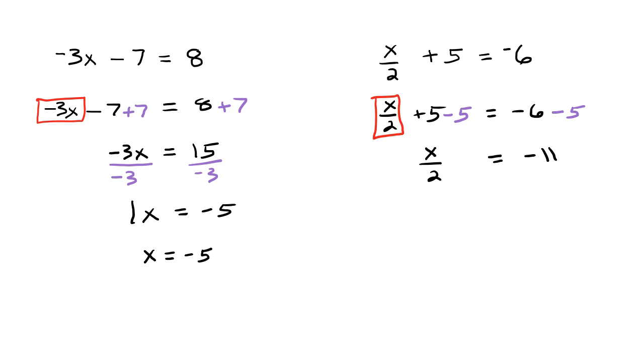Now to get x all by itself, I need to deal with this 2 that's being divided. So to undo division, I'm going to multiply both sides by 2. On the left, I've got 2 times x over 2, which is just 1x. And on the right side, I've got negative 11 times positive 2, which is negative 22. So my answer is x equals negative 22.